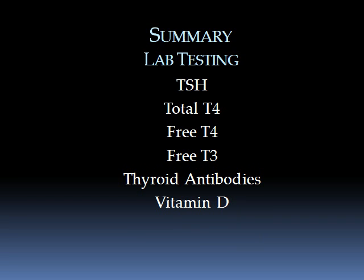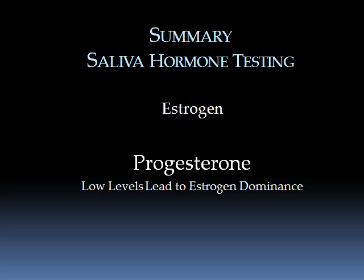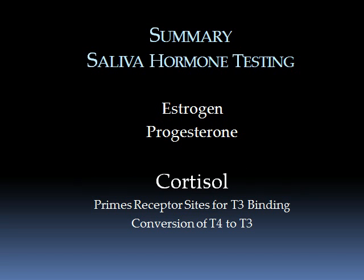Those are the six essential blood tests. I'd also add ferritin, which tells us your levels of iron — an important mineral required by the thyroid to make thyroid hormone. Other important hormones to test include estrogen and progesterone. If progesterone is very low, you can have estrogen dominance — meaning even normal estrogen levels can produce symptoms that appear to be due to high estrogen. Finally, cortisol, produced by the adrenals, is essential for priming receptor sites inside our cells for T3 binding and also helps with conversion of T4 to T3.